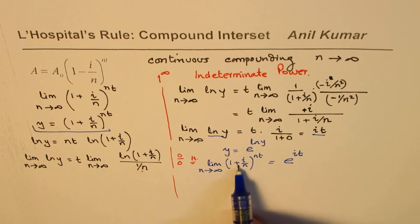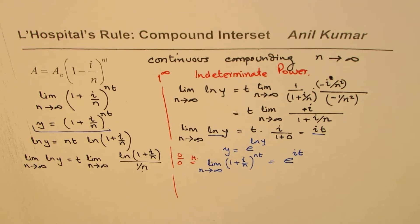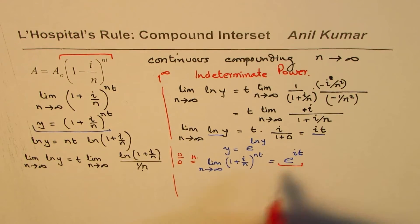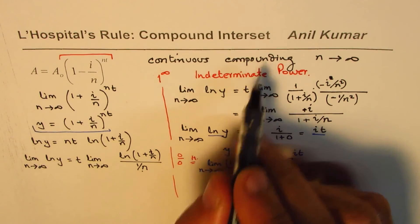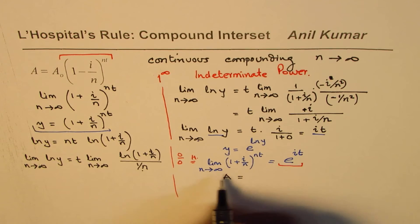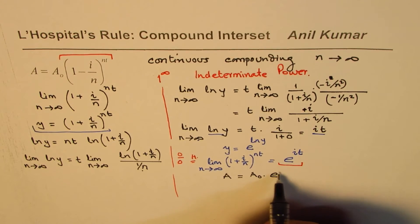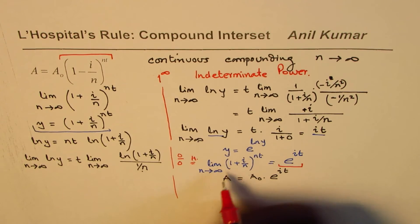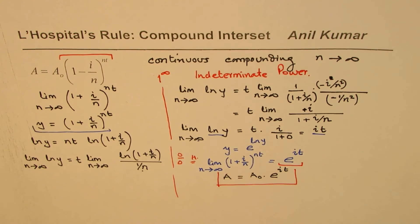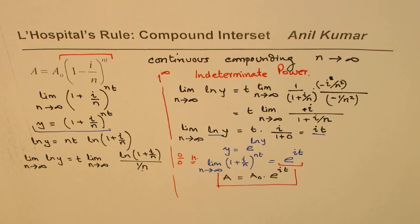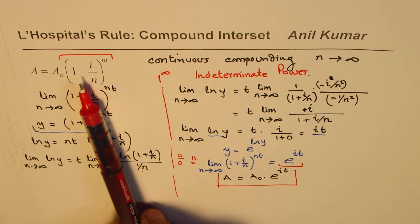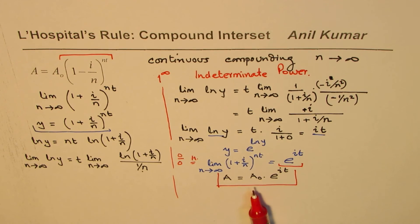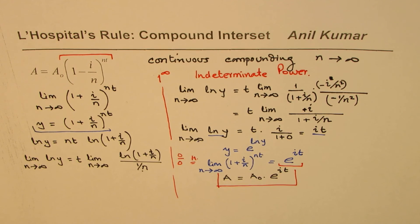Correlating back to our original formula, for continuous compounding the final investment amount A equals the initial amount A₀ times e^(iT). That is how we derive the formula for continuous compounding using L'Hôpital's rule. You can go through this video again to understand the concepts, and please share and subscribe. Thank you and all the best.